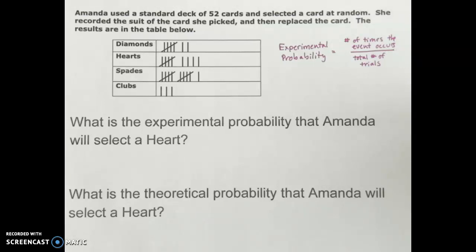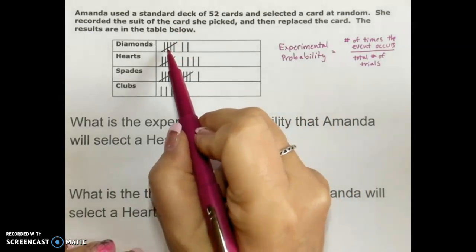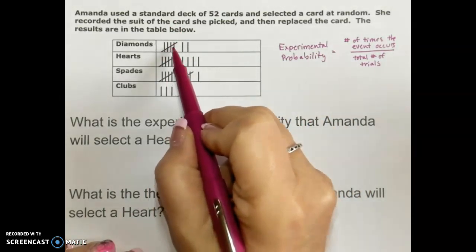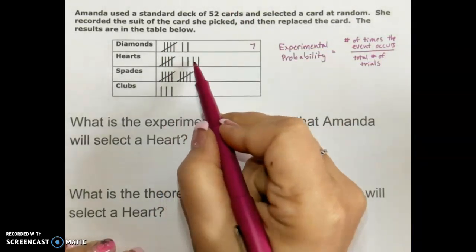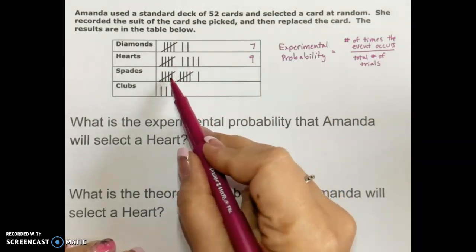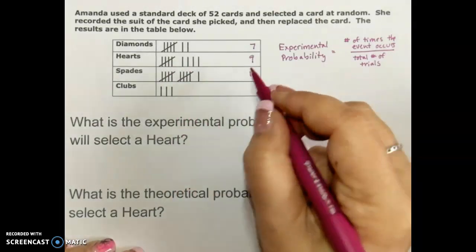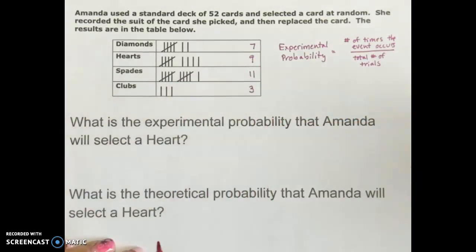So it looks to me like Amanda randomly picked a diamond card seven times. She picked a heart nine times. She picked a spade 11 times. And clubs was only randomly picked three times.